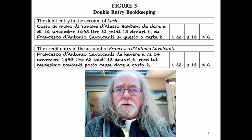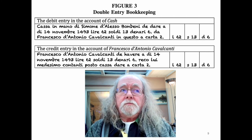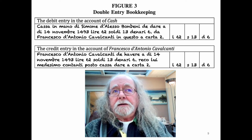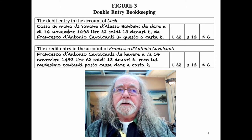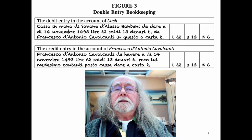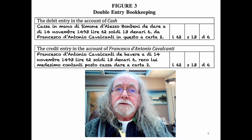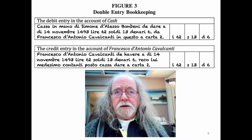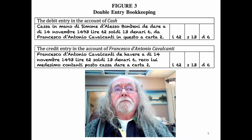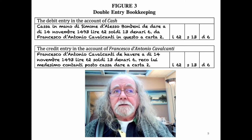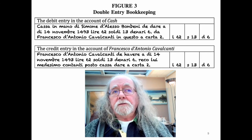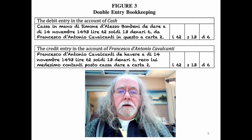This is an example of double-entry bookkeeping. It reads: 'Cash in the hands of Simone D'Alessi Bombeni, debit on 14th November 1493, 62 lira 13 soldi 6 denarii, and Francesco D'Antonio Cavalcanti in this book at Carta 2.' So you have the indication of where the contra entry is — in the cash account you have a contra to Carta 2 for Francesco's account, and in his account below it he has a contra entry back to where the cash account is.